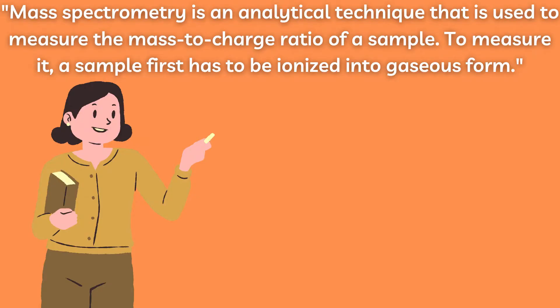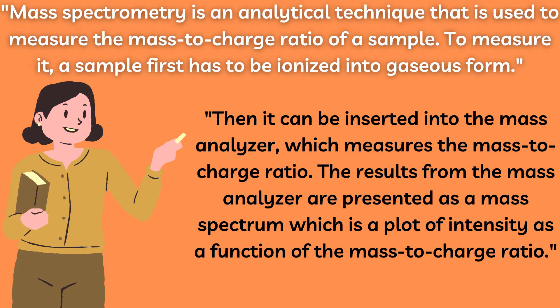Mass spectrometry is an analytical technique that is used to measure the mass-to-charge ratio of a sample. To measure it, a sample first has to be ionized into gaseous form, then it can be inserted into the mass analyzer which measures the mass-to-charge ratio. The results are presented as a mass spectrum — a plot graph where the size of each component in atomic units is displayed on the x-axis, and the relative abundancy of every single component in relation to all others is displayed on the y-axis.